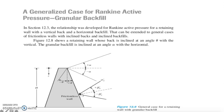Let's continue our discussion. We move on to a generalized case for Rankine active pressure with granular backfill. The relationship developed for Rankine active pressure for a retaining wall with a vertical back and a horizontal backfill can be extended to a general case of a frictionless wall with inclined back face and inclined backfill.